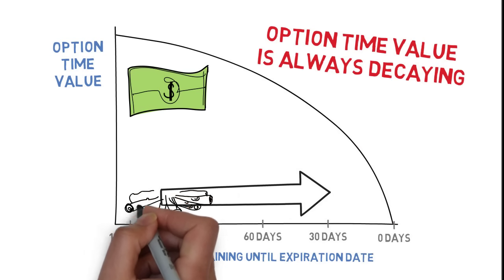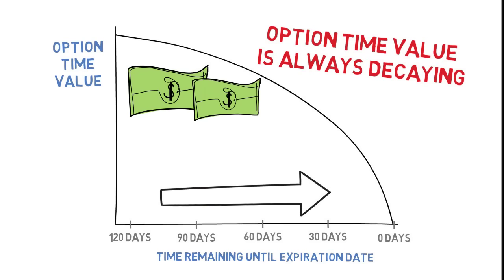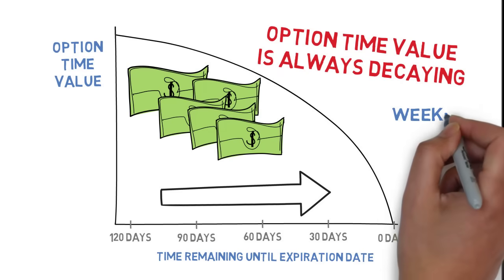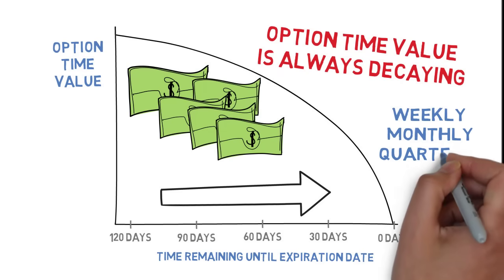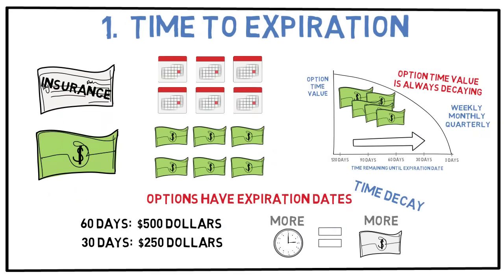Time decay can be your worst enemy if you trade options the wrong way, or it can be a huge advantage if you trade them correctly, which I'll show you in the next few videos. Most stocks have options with weekly, monthly, and quarterly expirations, and you can choose whatever expiration you want to trade in.